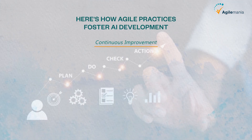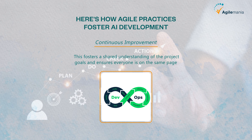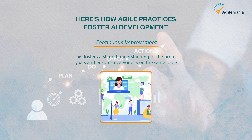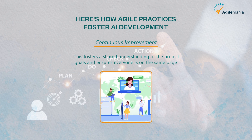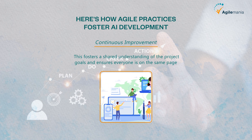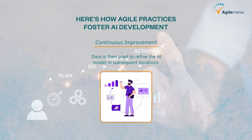Continuous Improvement: The core of Agile is the feedback loop. After each sprint, teams analyze user feedback and performance metrics. This data is then used to refine the AI model in subsequent iterations, ensuring it continuously improves.